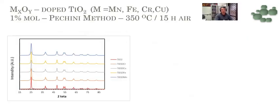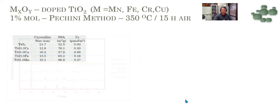We have more results, and this time it is titanium oxide containing some oxides like manganese, iron, chromium, and copper oxide — so these are transition metal oxide doped titanium oxides. All samples are 1 mol%, prepared by the Pechini method, calcined at 350 degrees for 15 hours in air. We see the same phase — it is just anatase. The crystallite size decreases with doping for all samples, and the specific surface area increases with doping. This suggests segregation, and the surface excess confirms it: we have surface segregation of chromium, copper, iron, and manganese in different proportions.